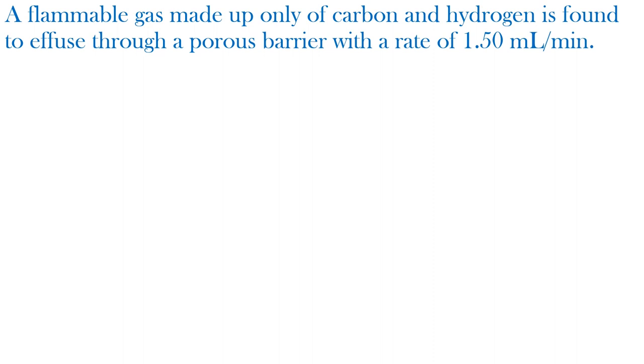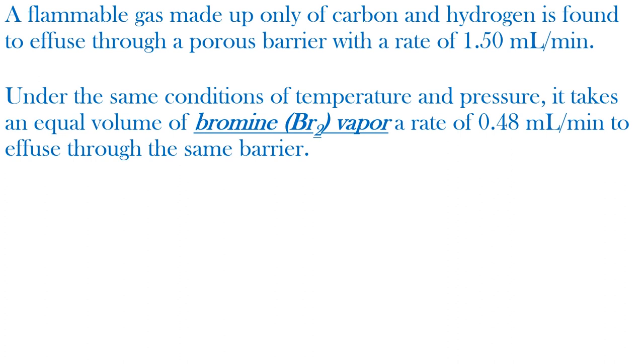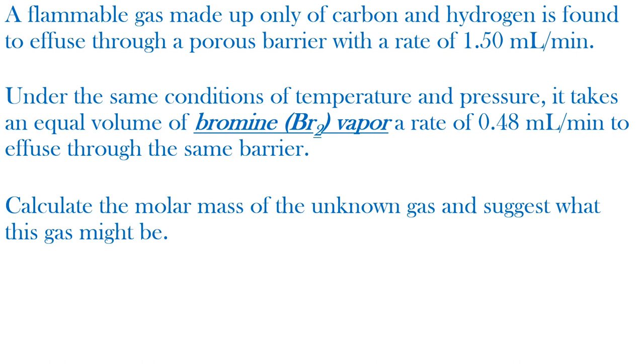A flammable gas, made up only of carbon and hydrogen, is found to effuse through a porous barrier with a rate of 1.50 milliliters per minute. Under the same conditions of temperature and pressure, it takes an equal volume of bromine vapor, a rate of 0.48 milliliters per minute, to effuse through the same barrier. Calculate the molar mass of the unknown gas and suggest what this gas might be.